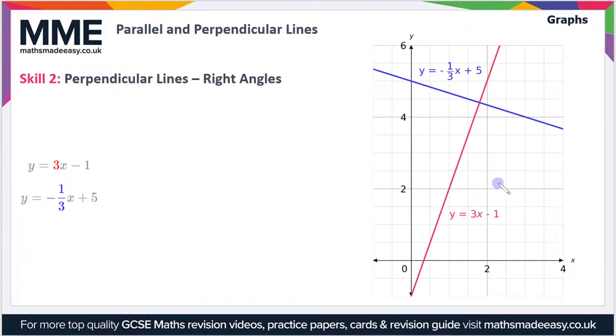We have the line y equals 3x minus 1, that's in red down here, and we have the line y equals minus a third x plus 5, the blue line up here. So what about these gradients then?